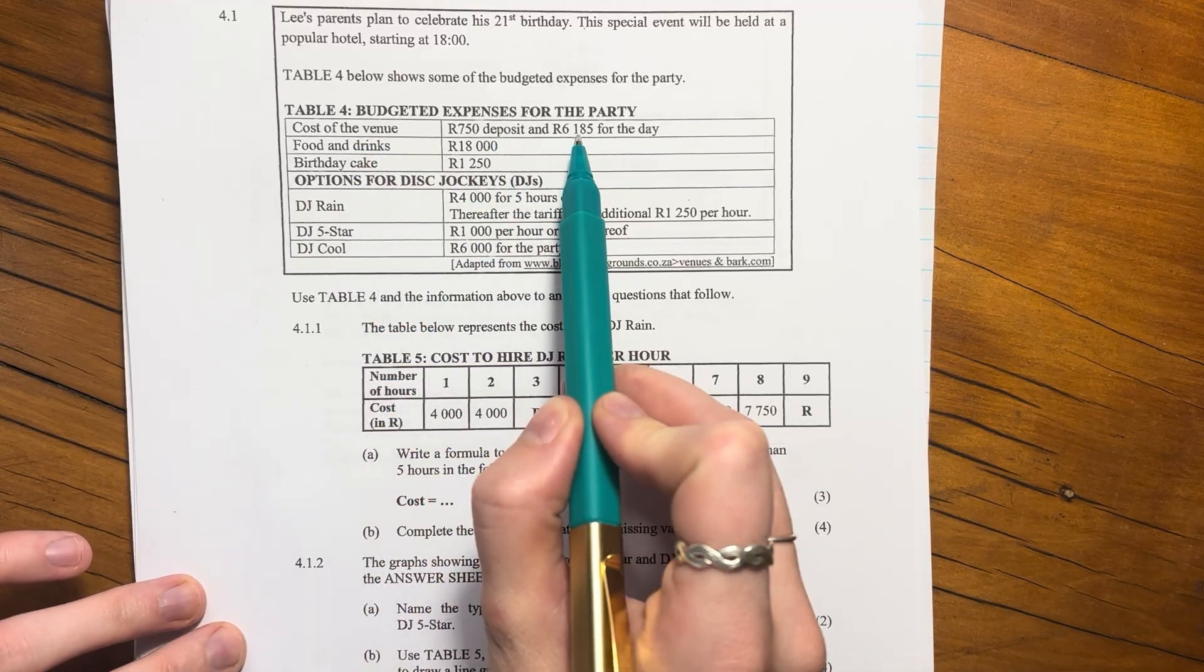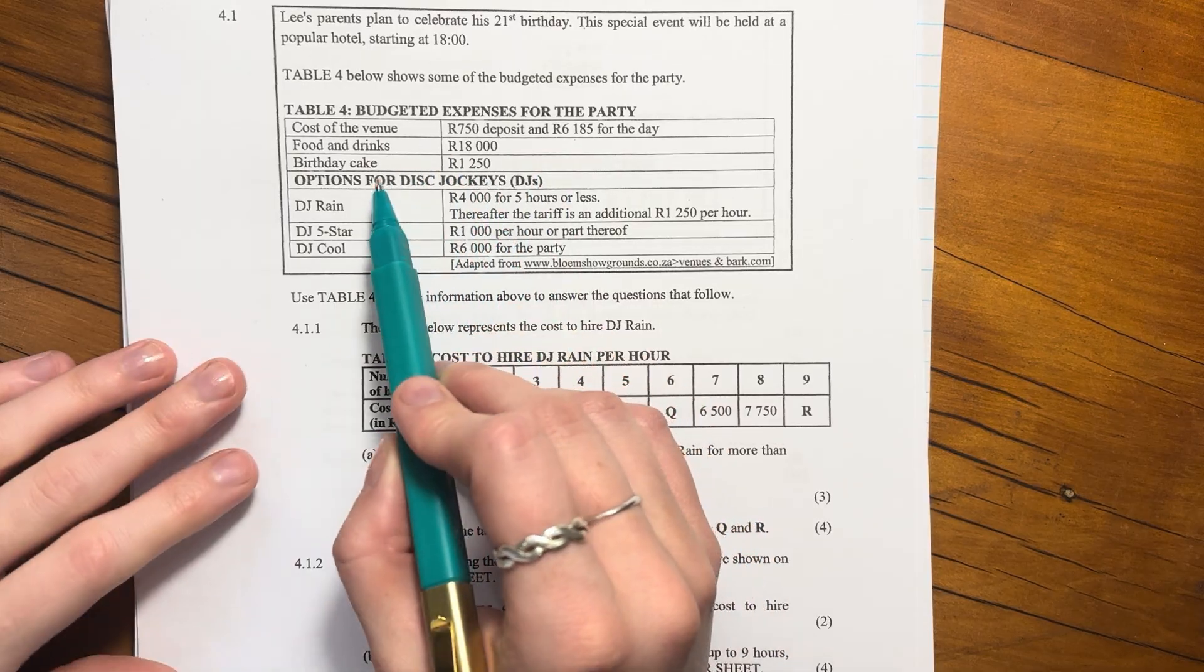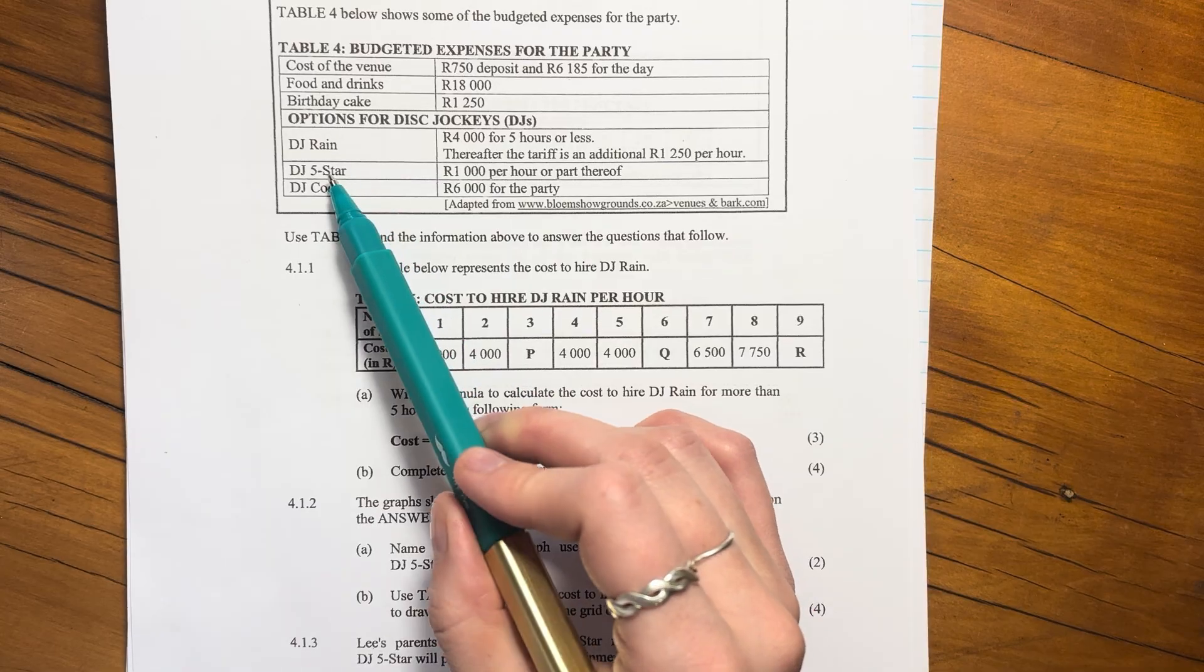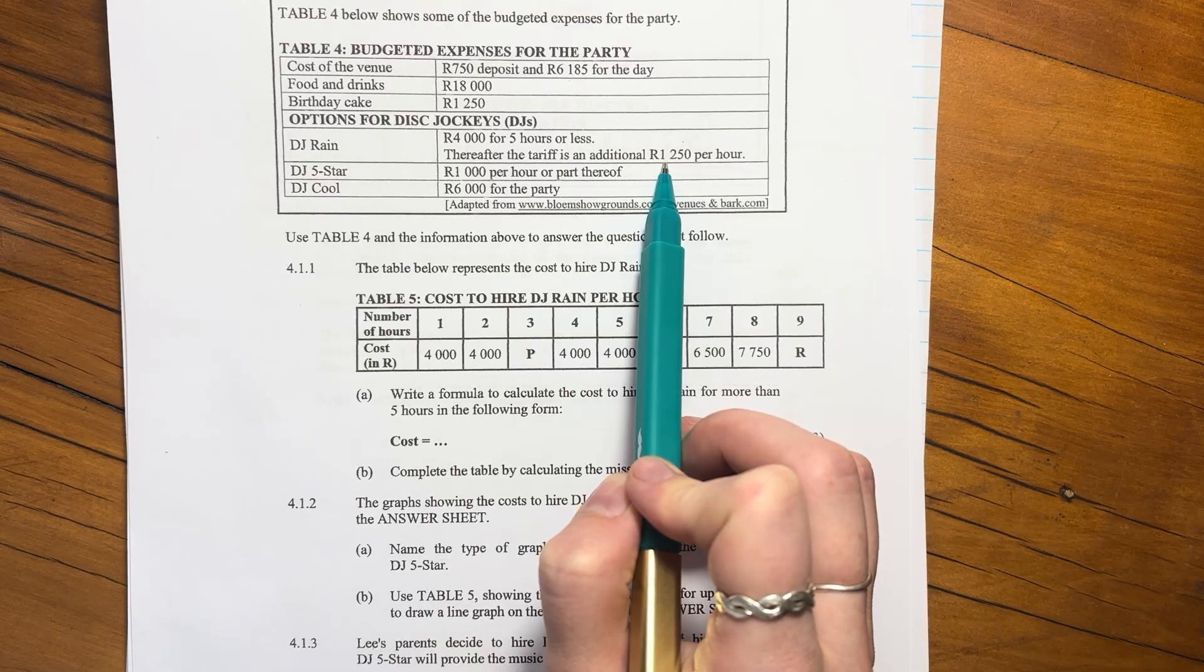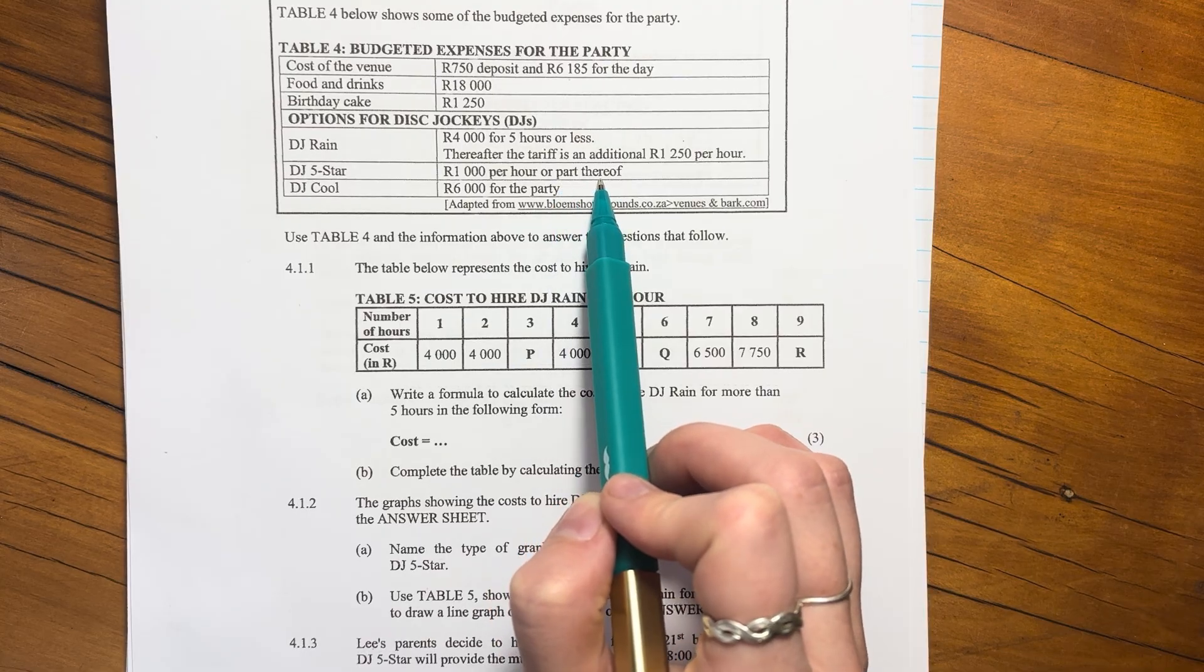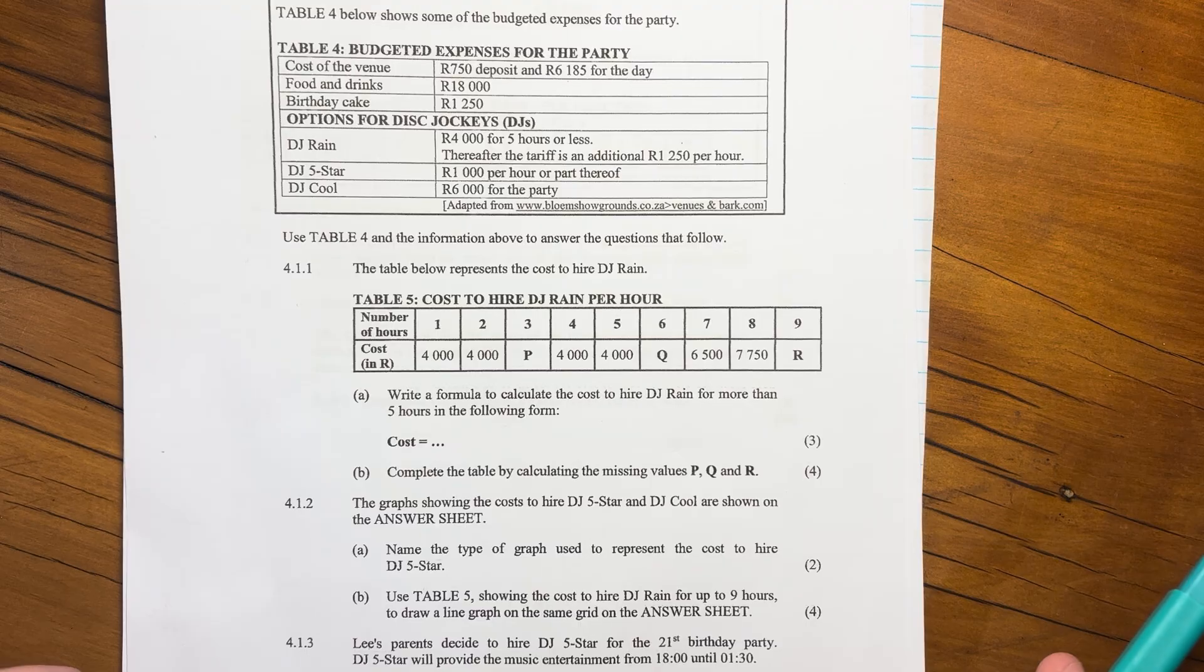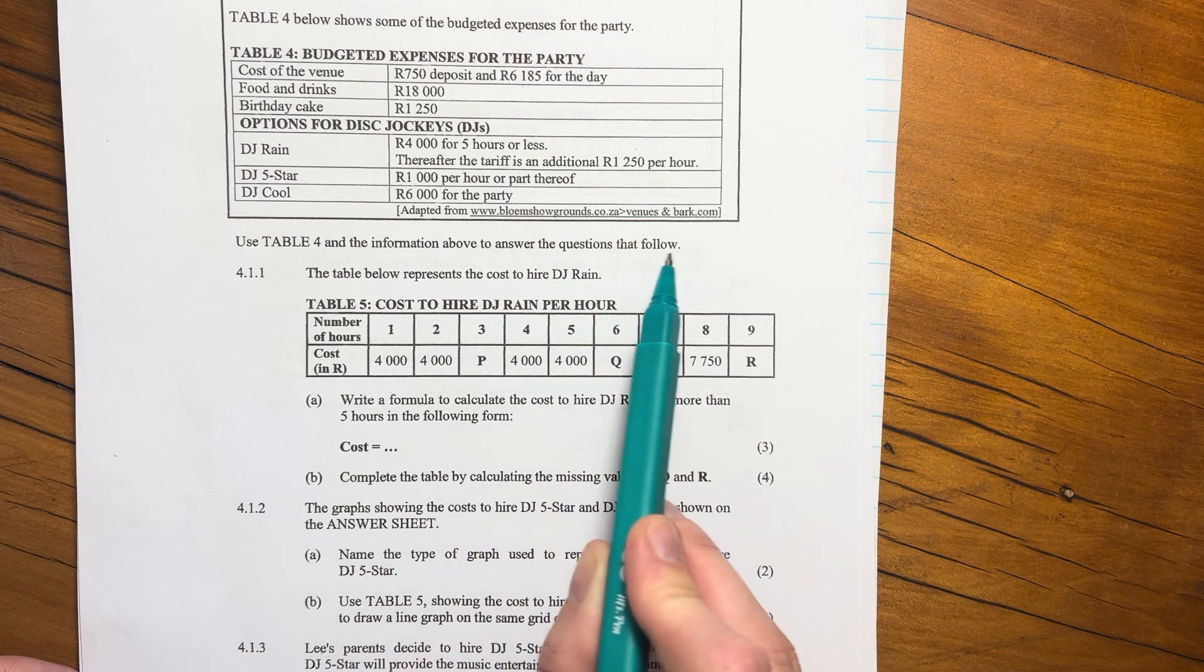Table four below shows some of the budgeted expenses for the party. There's the cost of the venue, a deposit and the amount on the day. Food and drinks, birthday cake, some expensive cake. Then options for the disc jockey, the DJ. We have three here: DJ Rain, DJ Five Star and DJ Cool. Use the table and the information above to answer the questions that follow.